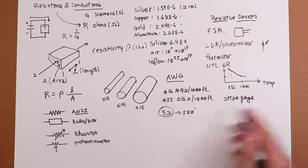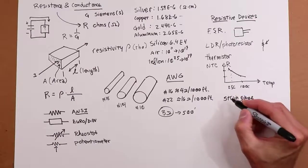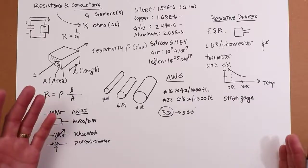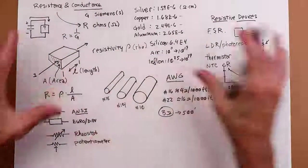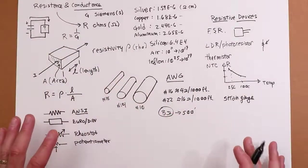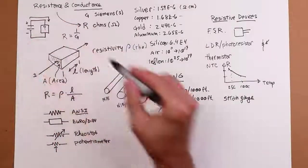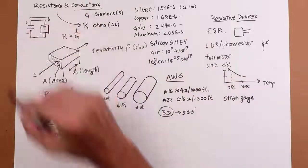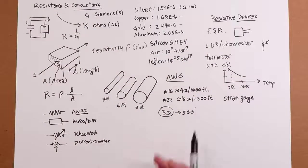All right, so again, there's more devices that we could come up with, but this kind of gives you a sampling. All right, so the next thing we're going to do is kind of put this whole thing together into an appropriate circuit where we're going to drive our resistive values with either a voltage source or a current source and see what happens.